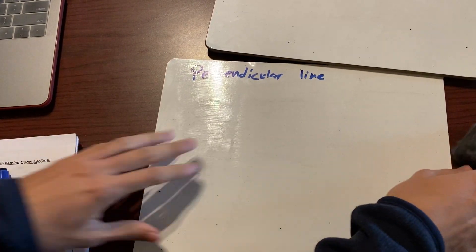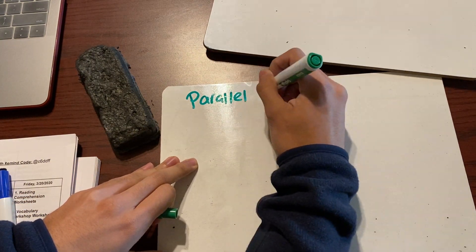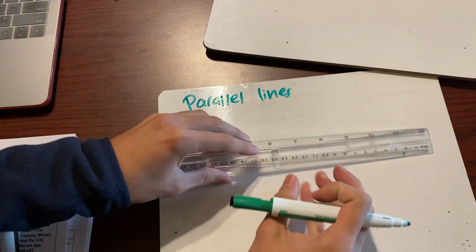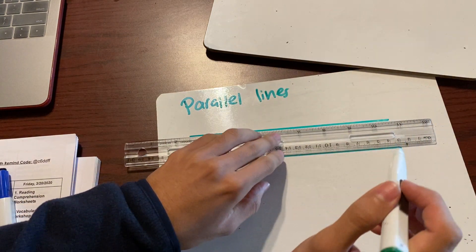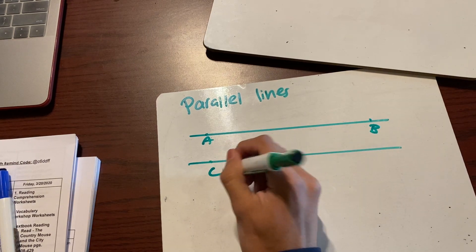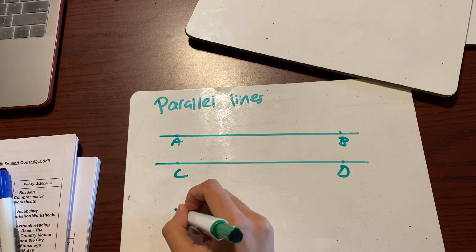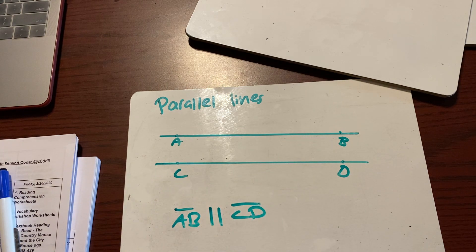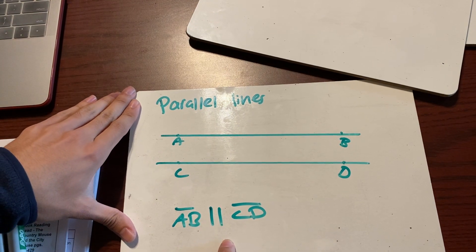Let's do number two — we have to draw parallel lines. Now parallel lines, I feel like they're a lot easier to understand. They're simply two lines that never meet. So for example, that line and that line. I'm going to call them AB and CD. These line segments are never going to meet. Line segment AB is parallel to line segment CD — they will never, never meet. And you put two lines in the middle, that's how you know that they are parallel.